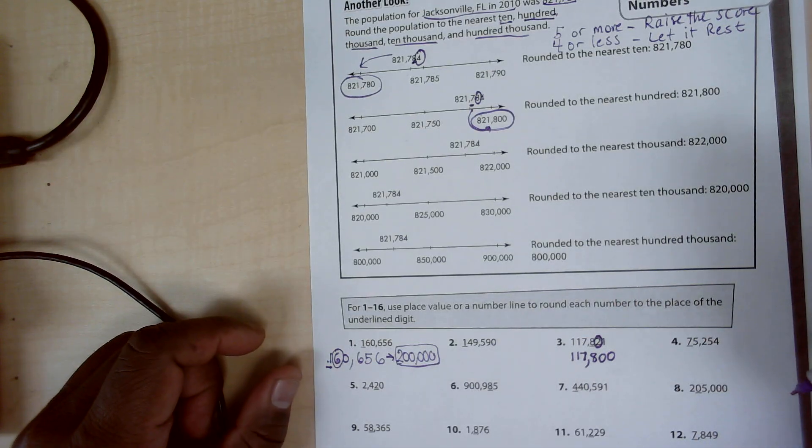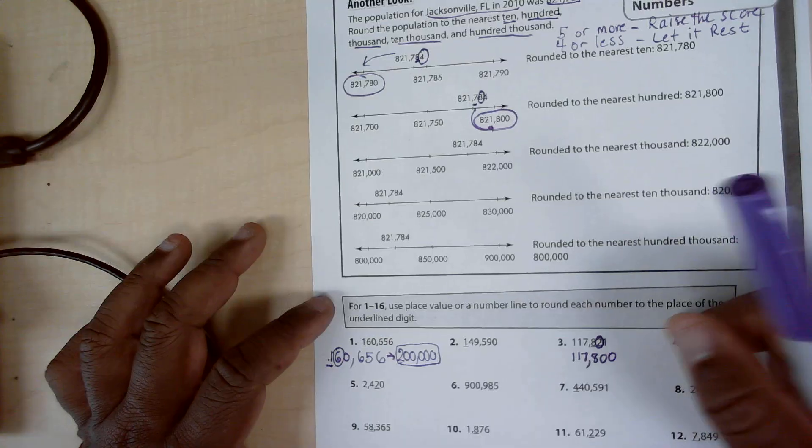So to the nearest hundred this rounds to seventeen thousand eight hundred. And let's try one more, number four.